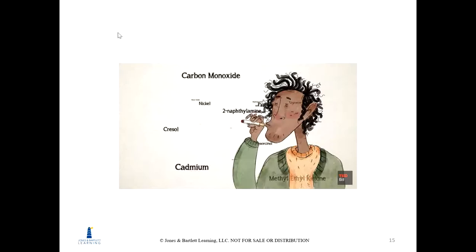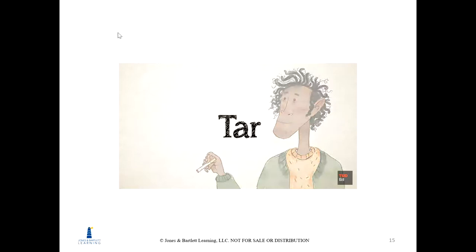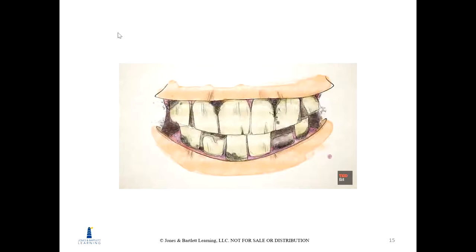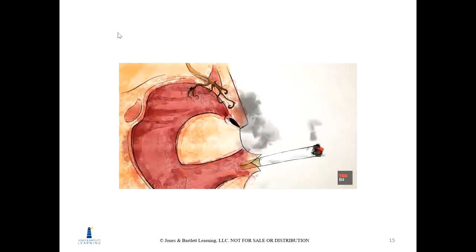With each inhalation, smoke brings its more than 5,000 chemical substances into contact with the body's tissues. From the start, tar — a black resinous material — begins to coat the teeth and gums, damaging tooth enamel and eventually causing decay. Over time, smoke also damages nerve endings in the nose, causing loss of smell.